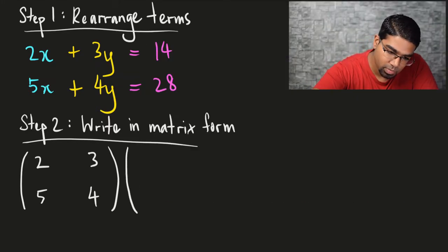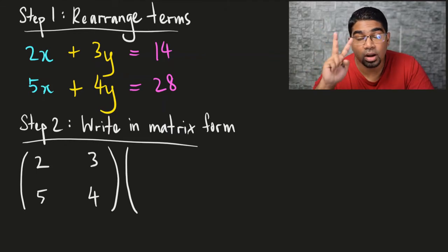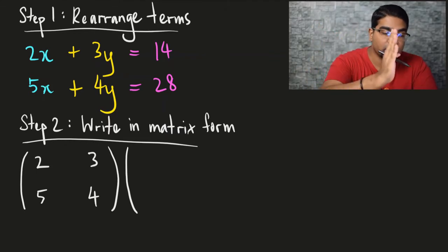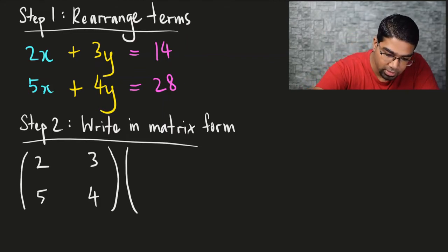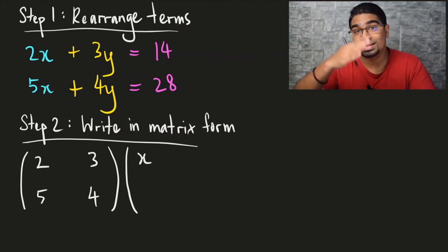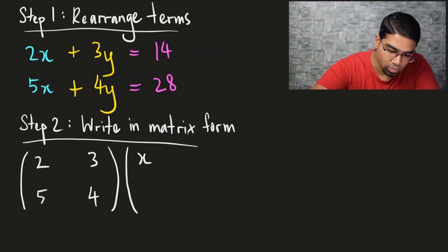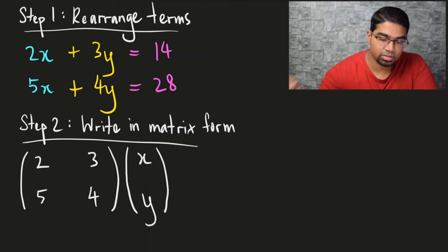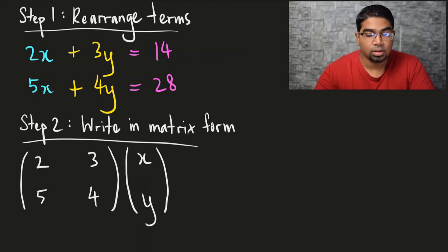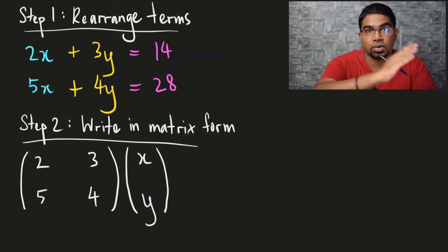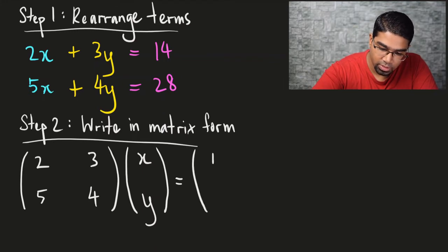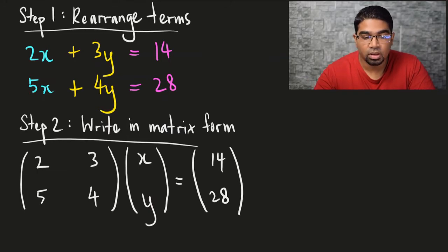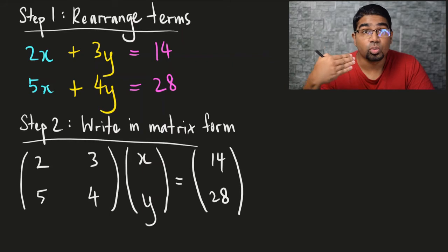Right next to that, we have our two unknowns. The first unknown — in this case x — will be on top, so we write x. And then the second one, y, will be at the bottom. So this is just a 2 by 1 matrix: x, y. Now we have done the left side of the equation. The right side is very easy — all we have to do is copy down the numbers exactly: 14 on top and 28 at the bottom. This is also a 2 by 1 matrix. So now we have successfully converted it into matrix form.